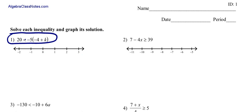For number one, we've got 20 is less than negative 5 times the quantity of negative 4 plus k. Thinking about PEMDAS, this is going to stick with us all year. We want to deal with our parentheses first, so we're going to take this negative 5 and distribute it to what's inside our parentheses. I'm going to do negative 5 times negative 4, then negative 5 times k.